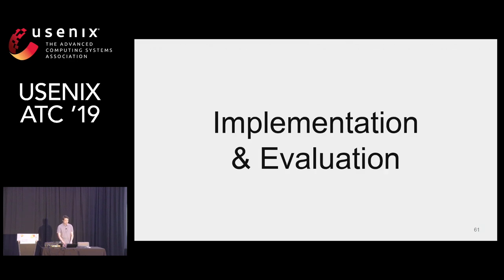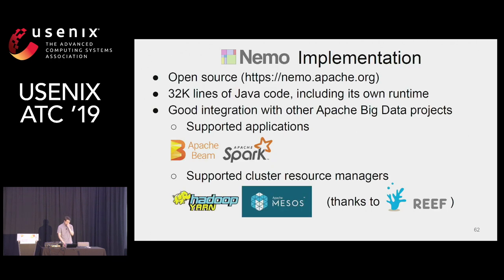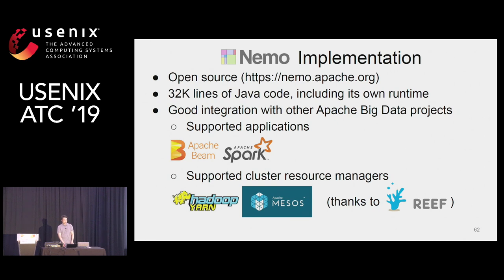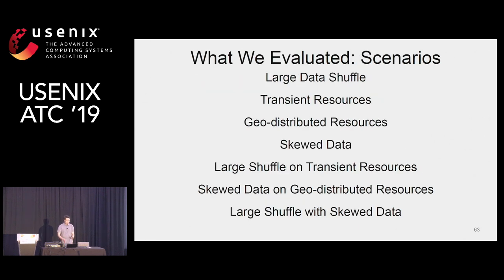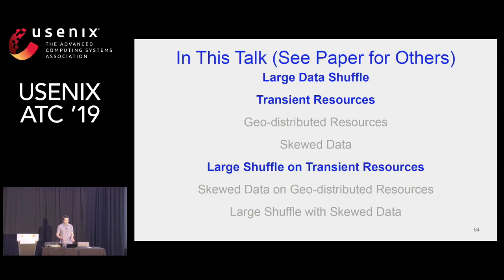Moving on to implementation and evaluation: Apache Nemo is open source with 32K lines of Java code, including its own runtime. Nemo integrates well with other Apache big data projects — you can run Beam and Spark applications on Nemo, and Nemo itself runs on resource managers such as Yarn and Mesos via Apache Reef. We evaluated various deployment scenarios: large data shuffle, transient resources, and large shuffle on transient resources.